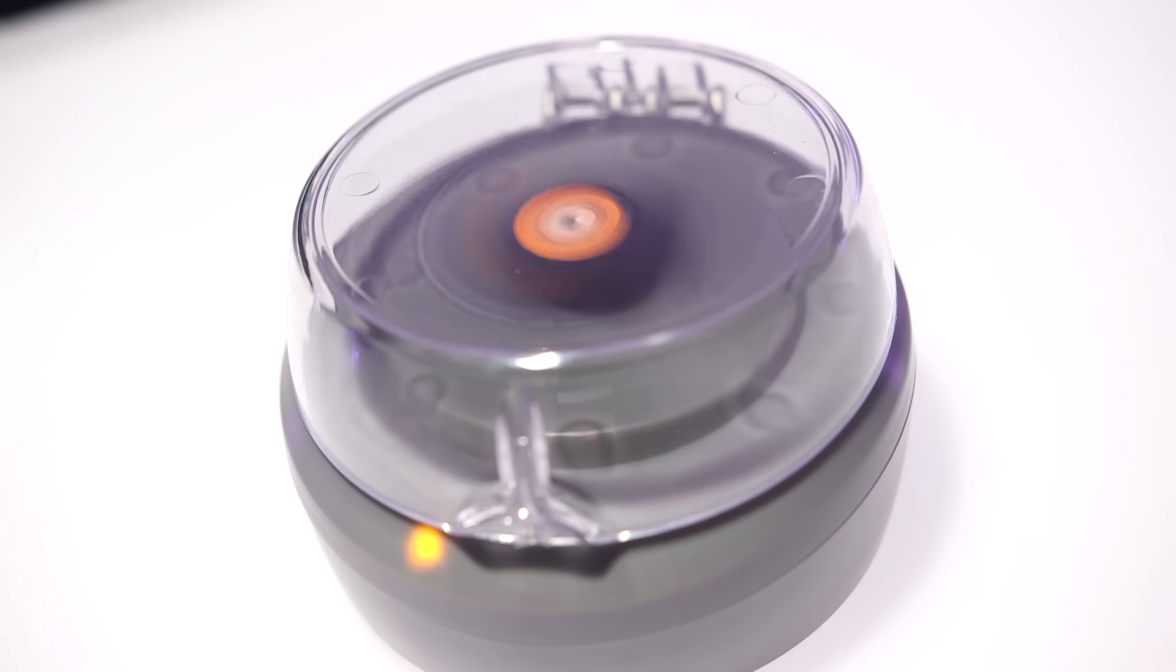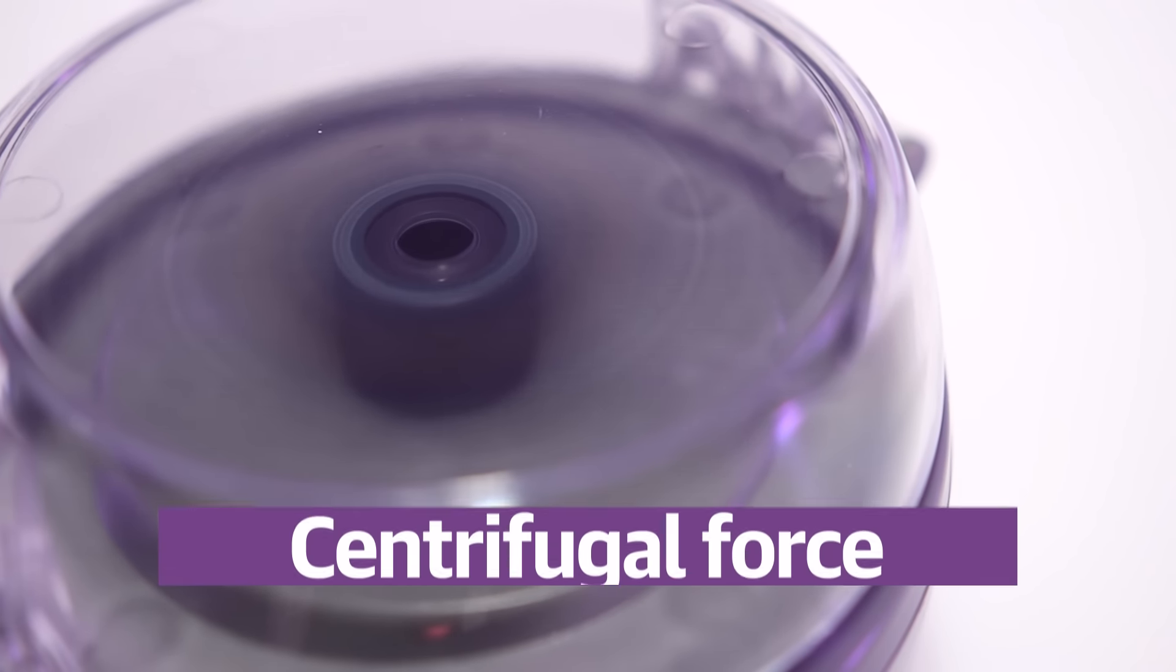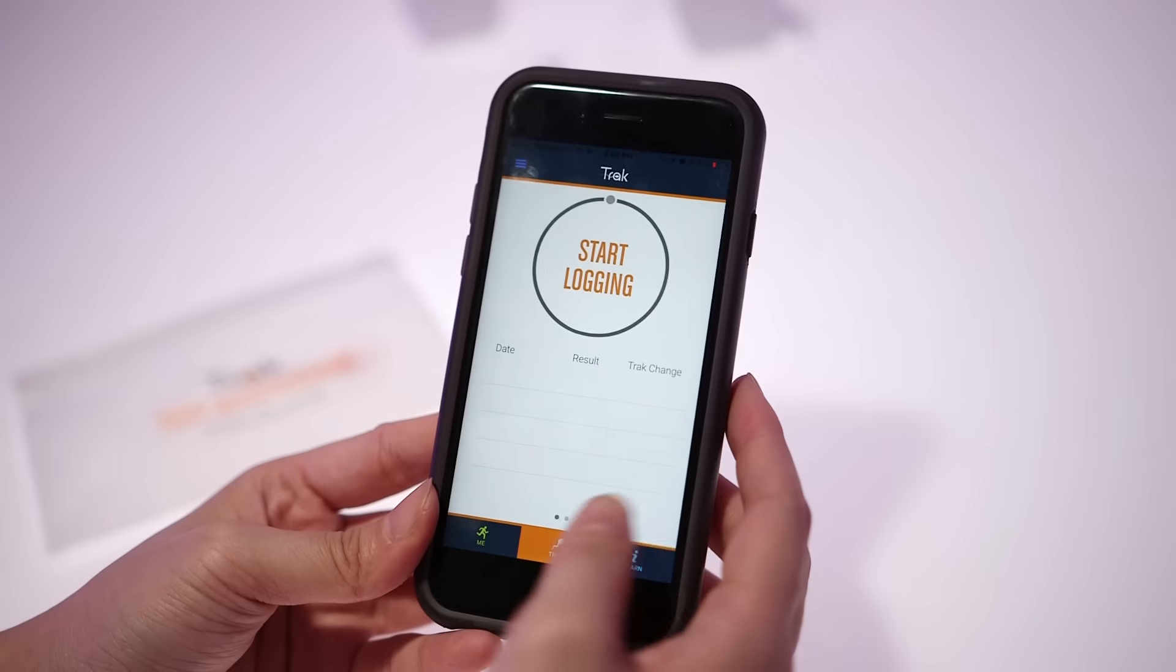That triggers the device to start spinning, and that centrifugal force separates the sperm and lets the device isolate and quantify sperm cells. After six minutes, that's done and you can log your results in the companion app on your phone.